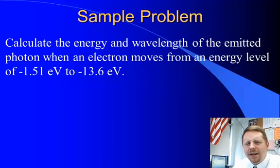So let's take a look at how we can apply this with a sample problem. Calculate the energy and wavelength of the emitted photon when an electron moves from an energy level of -1.51 eV to -13.6 eV, or electron volts.